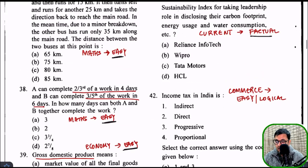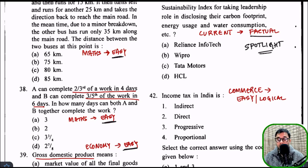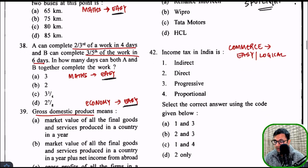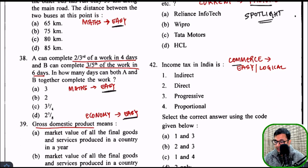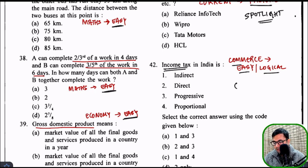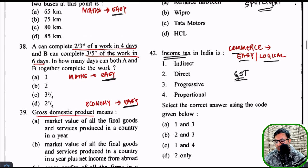Question 41 was from current affairs — a factual, spotlight-type question. If you don't read the spotlight for 6 months, you may miss 1 or 2 such questions. The cost-benefit analysis may seem low, but because this paper has only 100 questions, you cannot skip even one question — one question is 1% and that is important. Question 42 was from commerce — easy and logical, from income tax, which is not part of the syllabus. But it was a logical question, and after GST, most people know about income tax features. There might also be a question from GST in this examination.